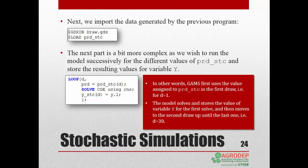In other words, GAMS first assigns to prd the value assigned to prd_stc in the first draw, D equal 1. The model solves and stores the current value of variable Y for the first solve, and then moves to the second draw, where it follows the same process. Assignment, solve the model, store the result, moves to the third draw and starts all over again until the last draw, D equal 30.